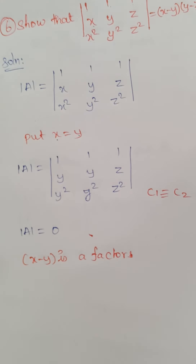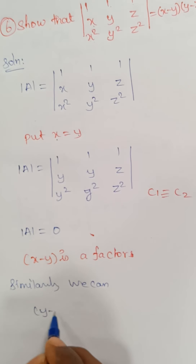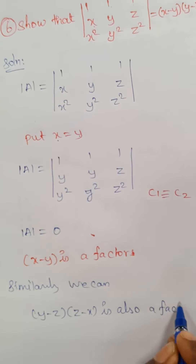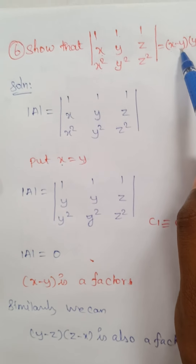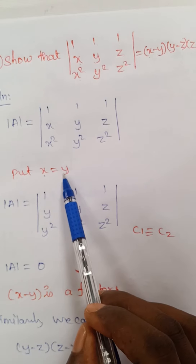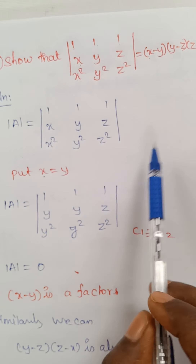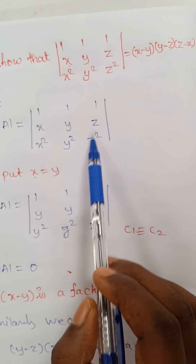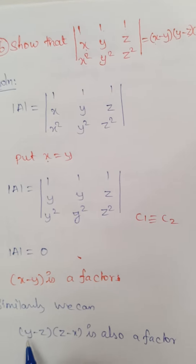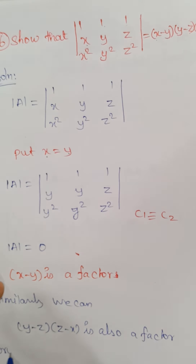Similarly, we can show that (y−z) and (z−x) are also factors. When y is equal to z, column 2 and column 3 become identical, therefore the determinant value is zero. When z is equal to x, column 1 and column 3 are identical, therefore the determinant value is equal to zero. So that is why (y−z) and (z−x) are also factors.